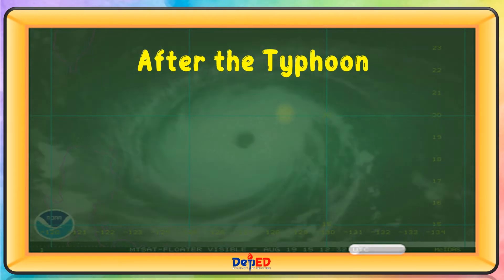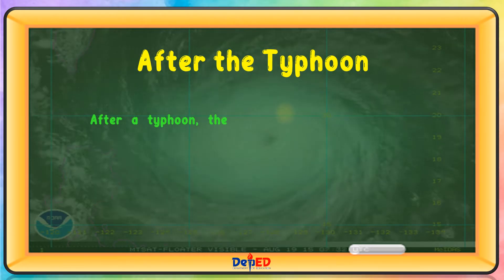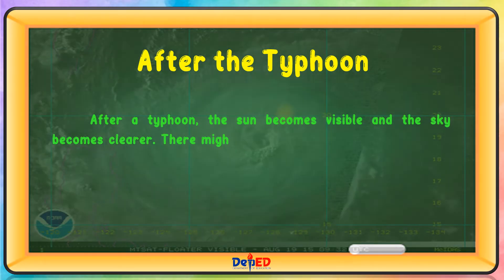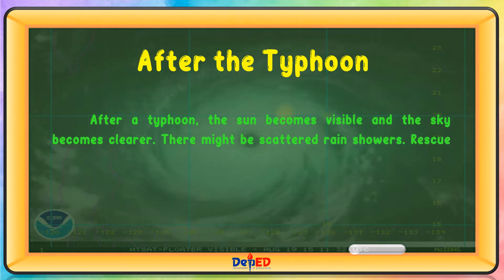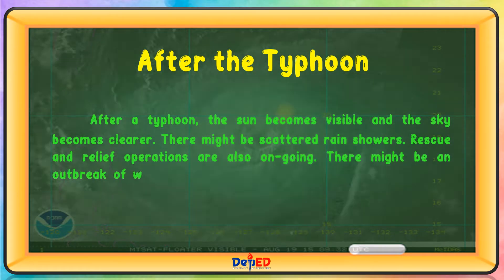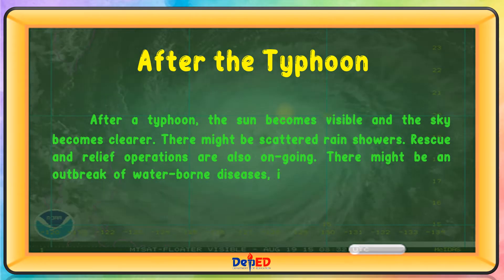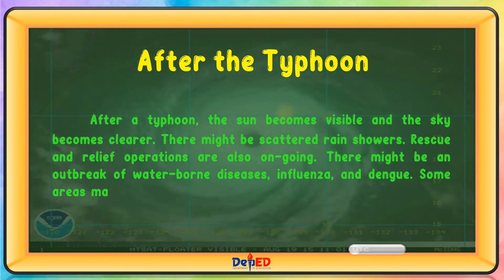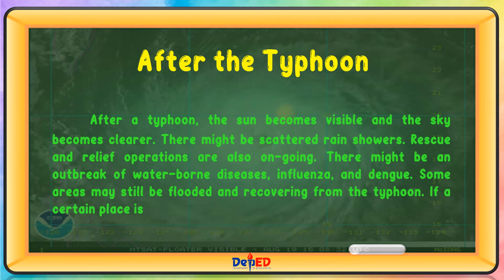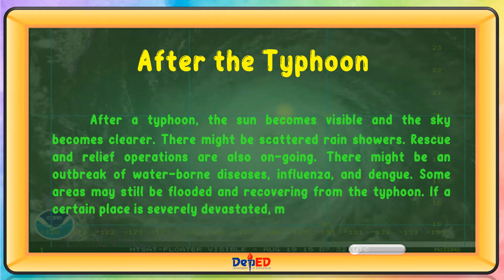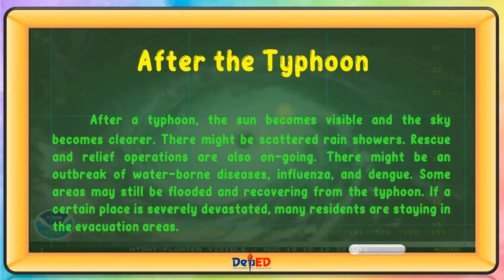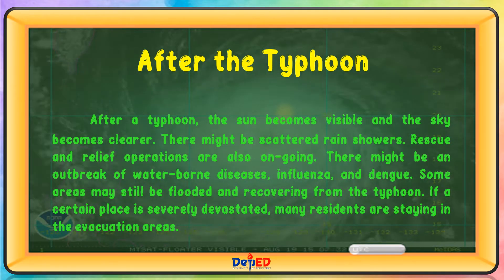After a typhoon, the sun becomes visible and the sky becomes clearer. There might be scattered rain showers. Rescue and relief operations are also ongoing. There might be an outbreak of waterborne diseases, influenza, and dengue. Some areas may still be flooded and recovering from the typhoon. If a certain place is severely devastated, many residents are staying in the evacuation areas.